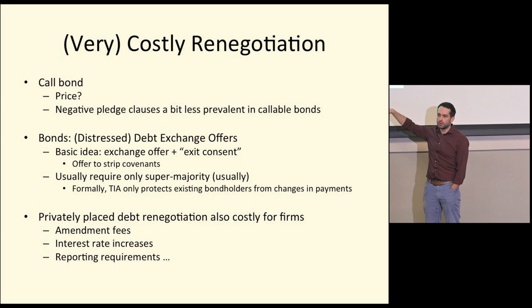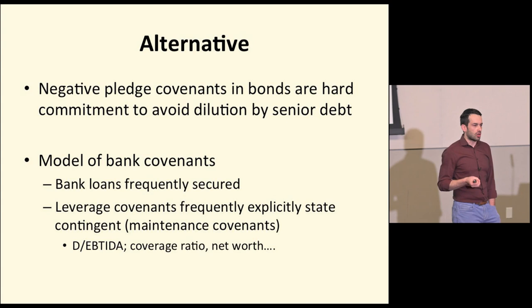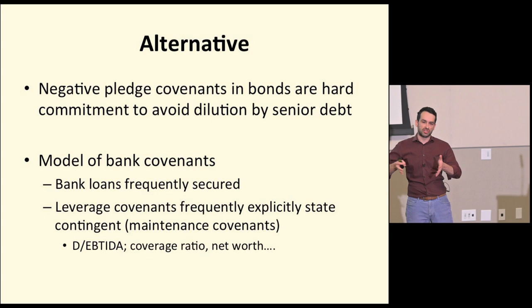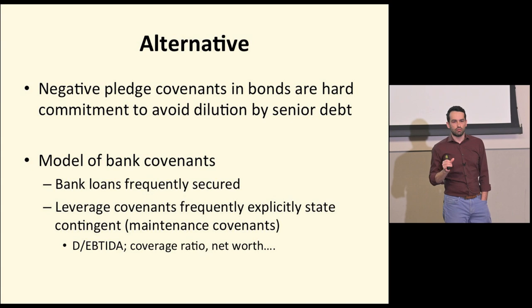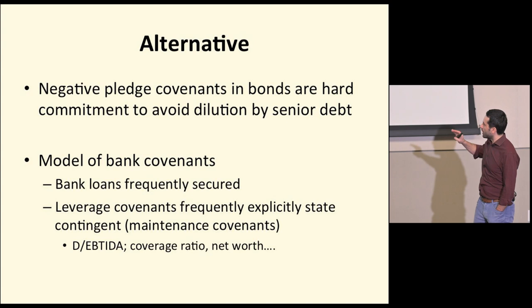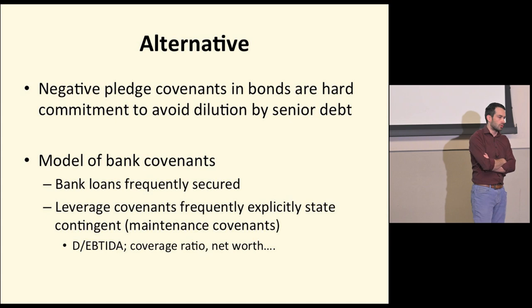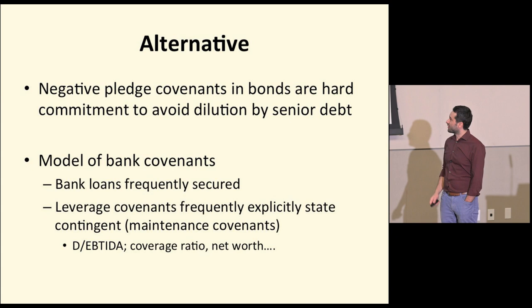In the data, banks do take their pound of flesh when you renegotiate — there are amendment fees and so on. More importantly, bank covenants are different — they're not really negative pledge covenants. Bank loans are frequently secured, and it's critical that negative pledge covenants live in unsecured debt. Additionally, leverage covenants in bank debt are much more what we call maintenance covenants — explicitly conditioned on the state of the world — whereas the negative pledge covenants in the model are by design not state-contingent. I'd like to see more explicit evidence on how often negative pledge covenants get waived.